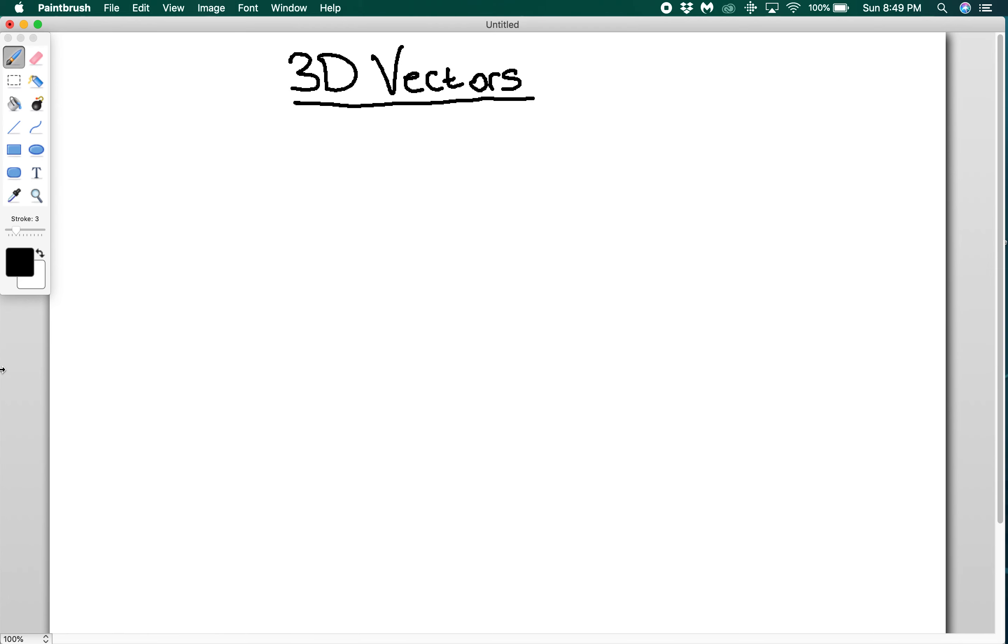So today we're going to be talking about 3D vectors. 3D vectors are a lot like 2D vectors, except they have one additional component. Whereas 2D vectors had components that pointed in the x and the y direction, now we're also going to be working with the z direction.